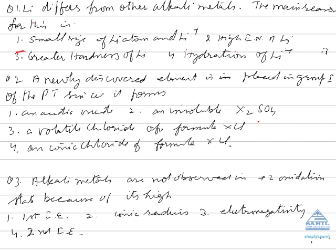Evaluating the choices: forming acidic oxides is wrong because their ionization energy is low. Insoluble X₂SO₄ implies a valency of 2, but Group 1 elements show valency 1 — so that is incorrect. A volatile chloride of formula XCl is wrong because the chloride is ionic and therefore not volatile. The correct answer is the fourth option: an ionic chloride of formula XCl.